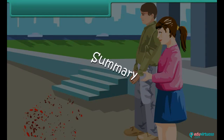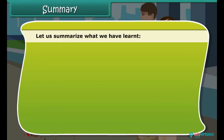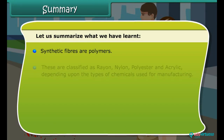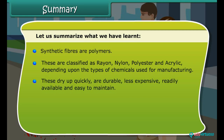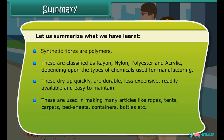Summary. Let us summarize what we have learned. Synthetic fibers are polymers. These are classified as rayon, nylon, polyester and acrylic, depending upon the types of chemicals used for manufacturing. These dry up quickly, are durable, less expensive, readily available and easy to maintain. These are used in making many articles like ropes, tents, carpets, bedsheets, containers, bottles, etc. Fabrics made of synthetic fibers can readily catch fire and melt on burning.